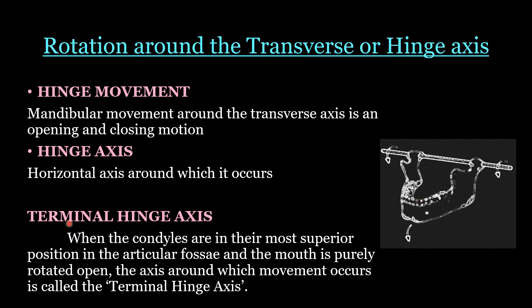What is the terminal hinge axis? When the condyles are in their most superior position in the articular fossa and the mouth is purely rotated open — that means 10 to 13 degrees of rotation of the condyle in the temporomandibular joint — it provides a jaw separation of 20 to 25 millimeters in the incisal region. The axis around which this movement occurs is called the terminal hinge axis. This is often asked as an MCQ.